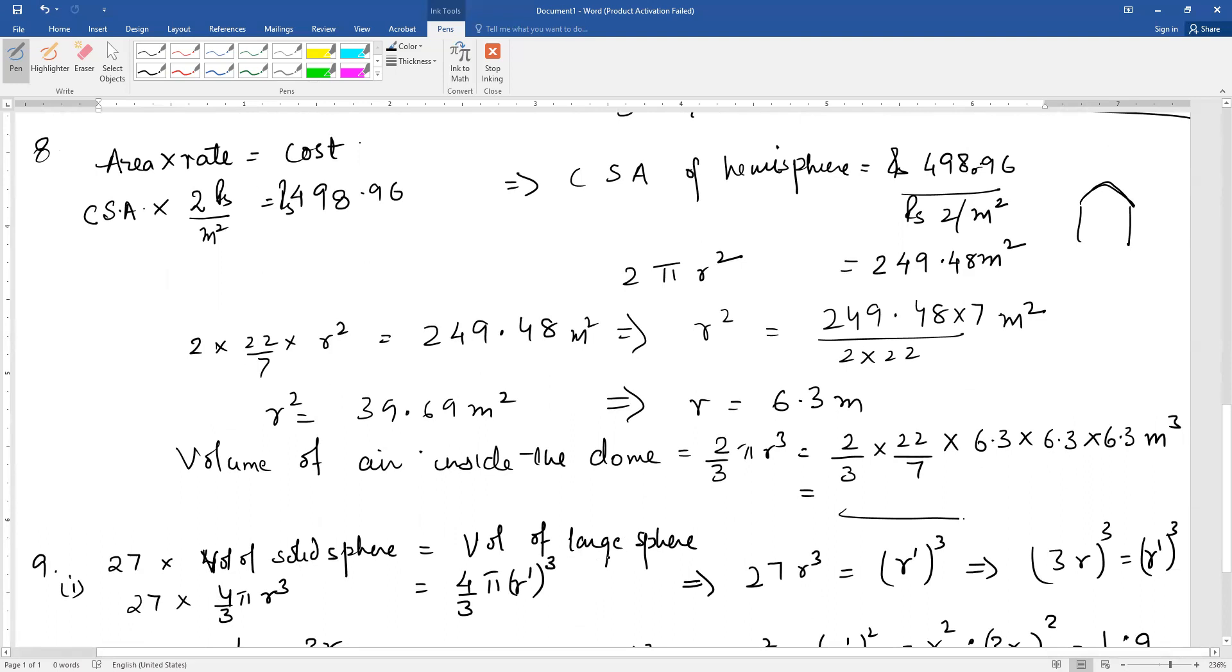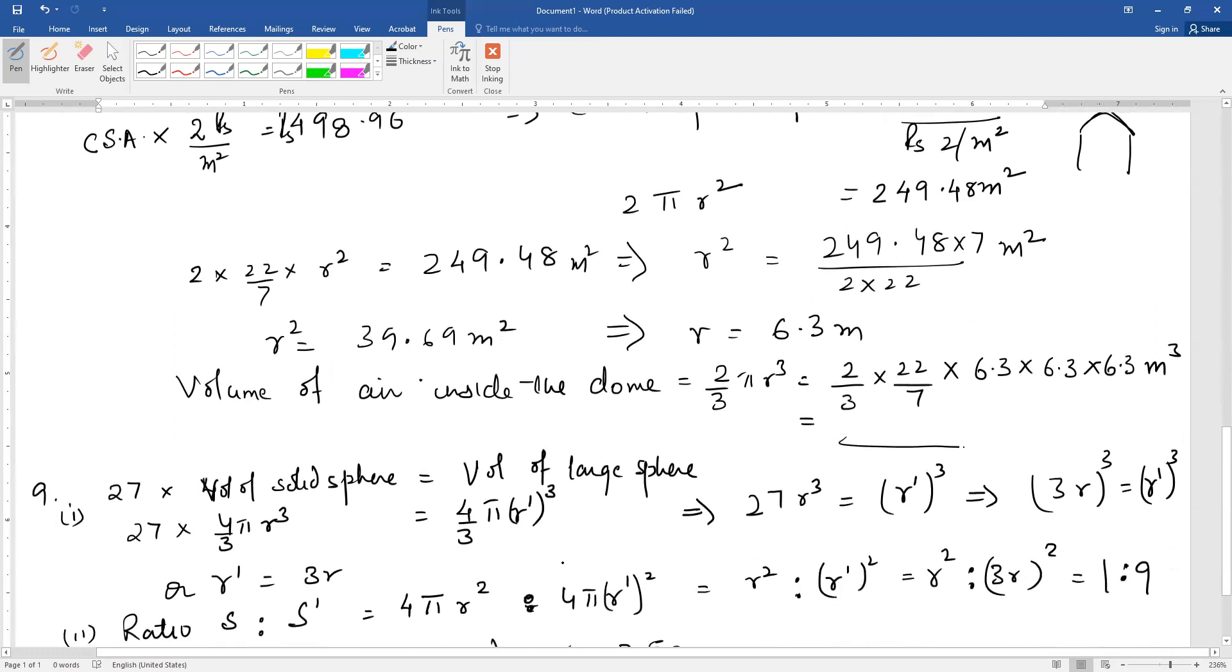The smaller spheres have radius r given, and the new sphere formed has radius r'. So 27 × 4/3 π r³ equals 4/3 π r'³, the large sphere volume. 4/3 π cancels, 27 r³ equals r'³. Now we know that 27 is 3³. 3³ into r³ means (3r)³ equals r'³. Therefore r' equals 3 times r. This is the relationship.